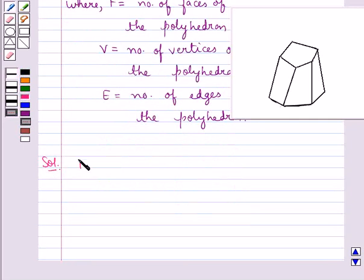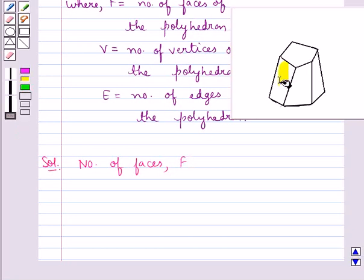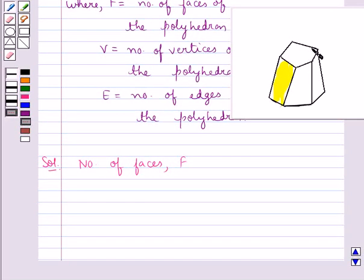Number of faces, that is F in this figure would be: this is one face, this is the second face, third face, fourth face, one face along this edge, one face along this edge, and one is the base. So in all we have F equal to 7.